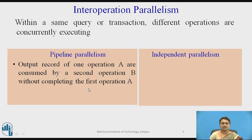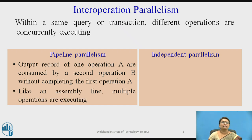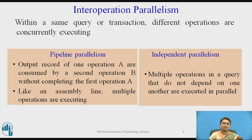As soon as the first operation starts its execution, as soon as tuples and results are generated, those are simultaneously given to the second operation. The output of operation A is consumed by operation B without completing the first operation, because as soon as results are generated those are provided to the next operation. In independent parallelism, multiple operations in a query work independently without depending on each other.